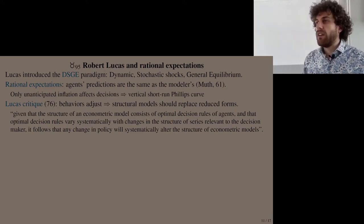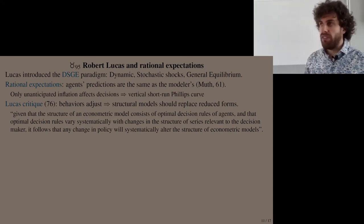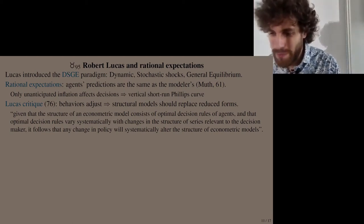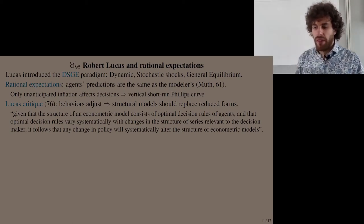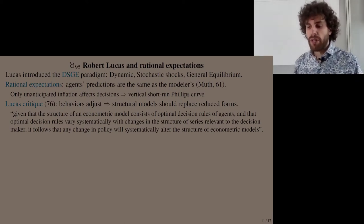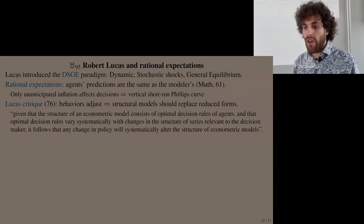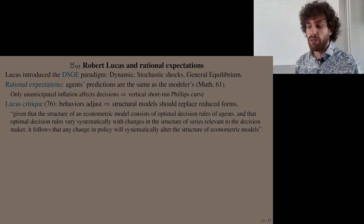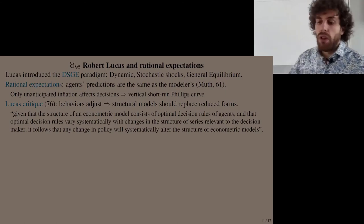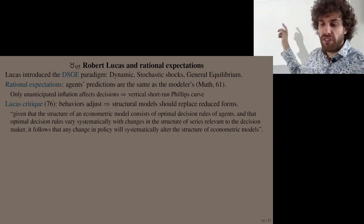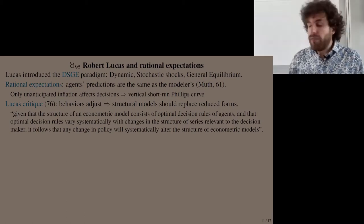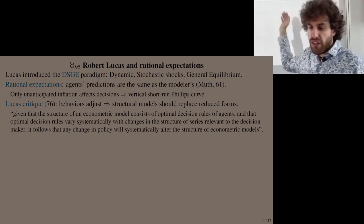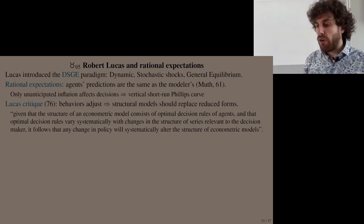Lucas's quote captures this: 'Given that the structure of an econometric model consists of optimal decision rules of agents, and that optimal decision rules vary systematically with changes in the structure of series relevant to the decision maker...' — meaning behaviors of people vary with policies — 'it follows that any change in policy will systematically alter the structure of the econometric model.'